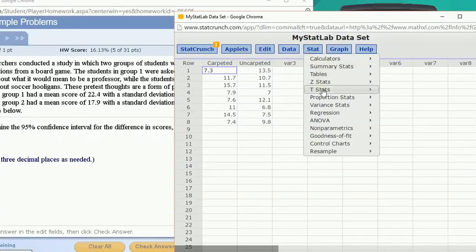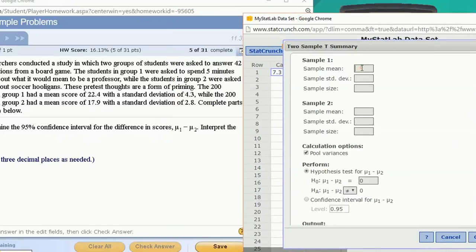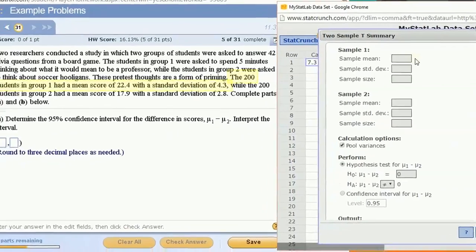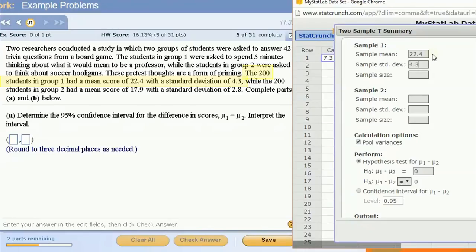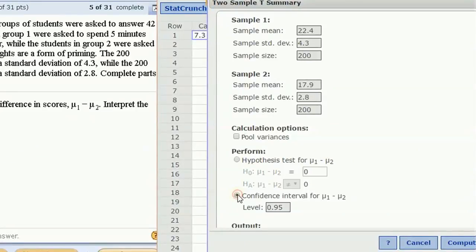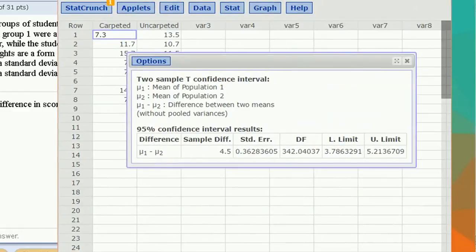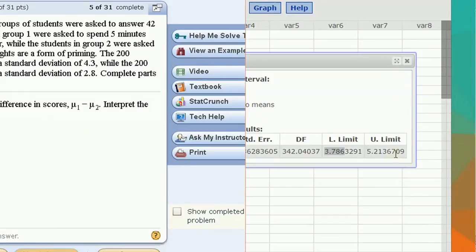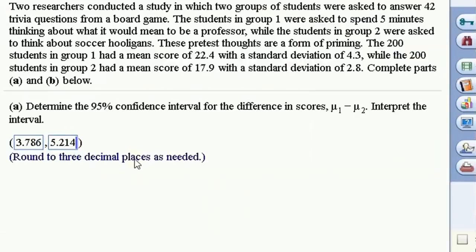Under the t-stats two sample with summary, I'm going to put in the necessary pieces to create a confidence interval. For the first sample, we've got a mean of 22.4 and a standard deviation of 4.3 out of 200 sample size. Second sample, this is hooligan thinkers, 17.9, 2.8 for the standard deviation, and again a sample size of 200. I'm not going to pool variances, and I'm not going to choose a hypothesis test. I'm going to do confidence interval. I'm asked to do 95% confidence level, so that's what I'm going to choose, 0.95. Click compute and see what I get.